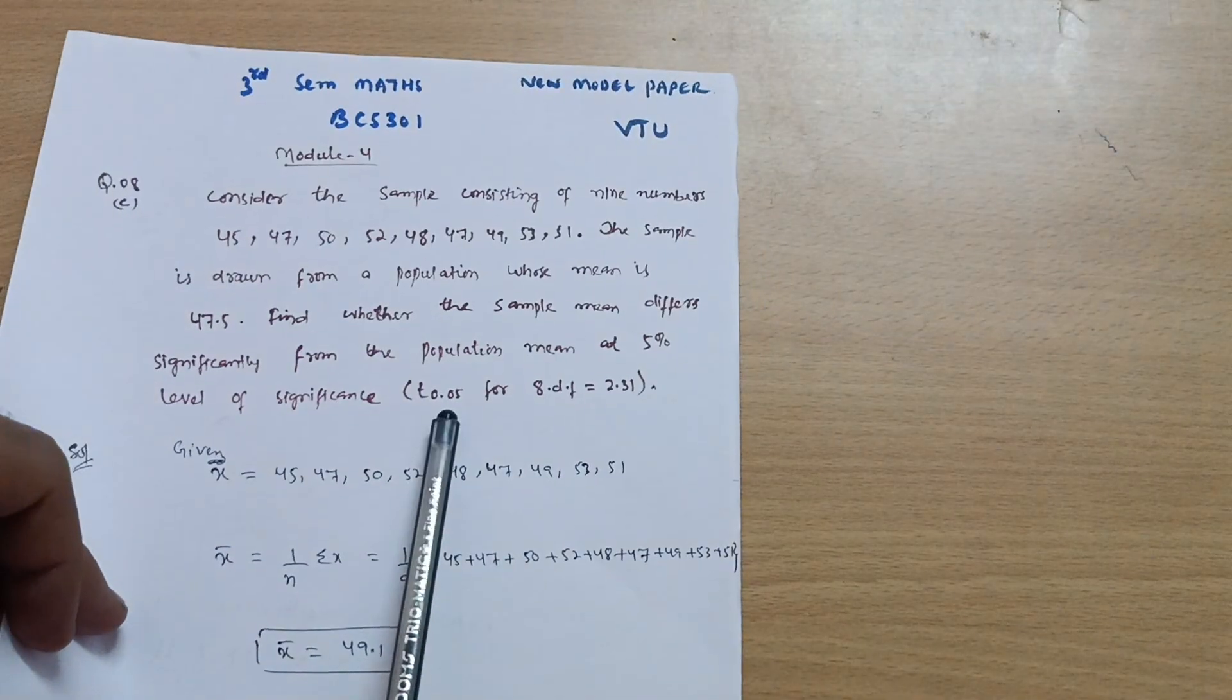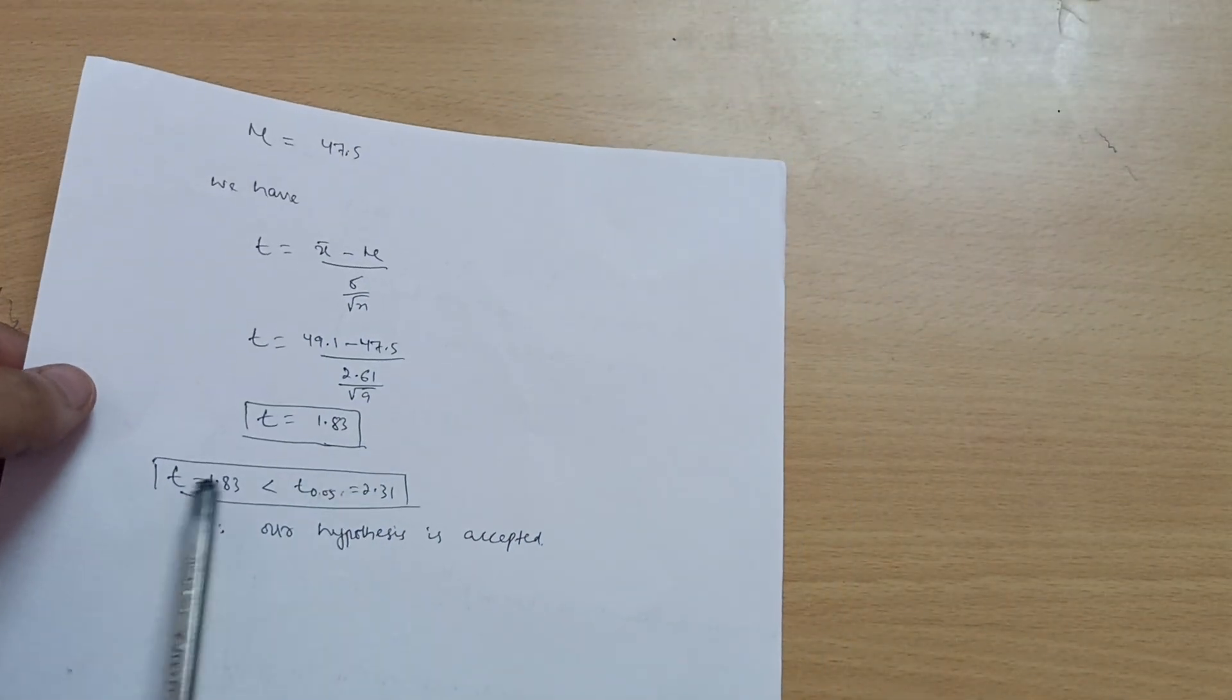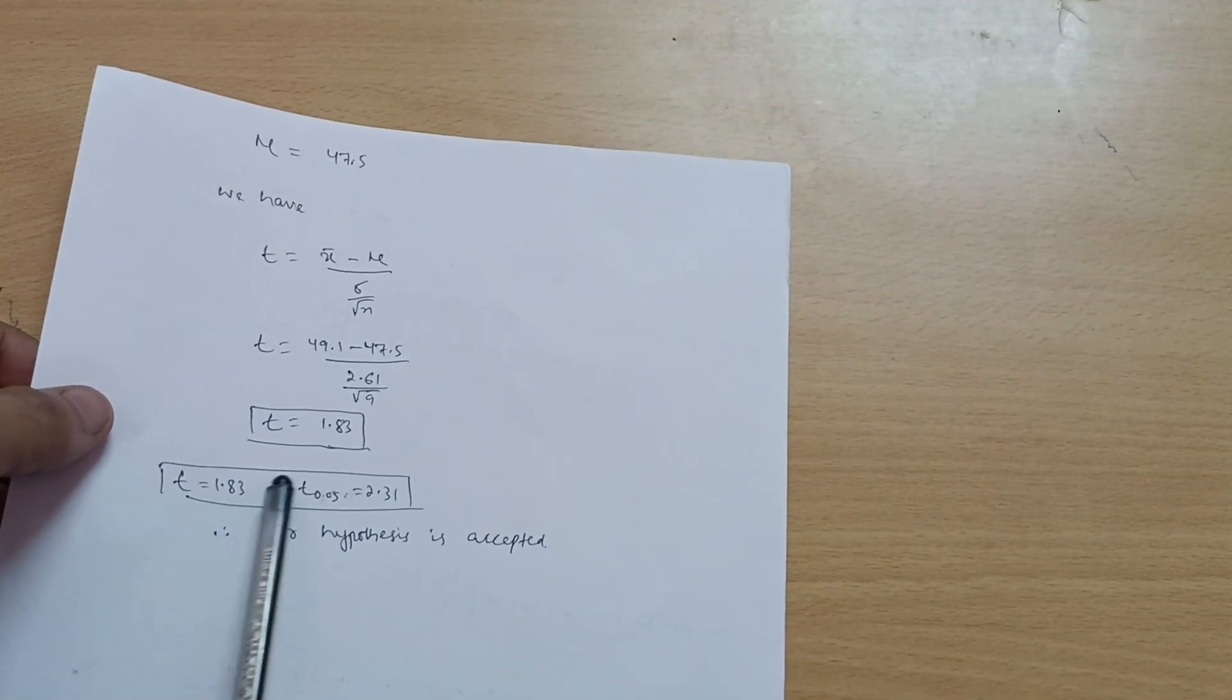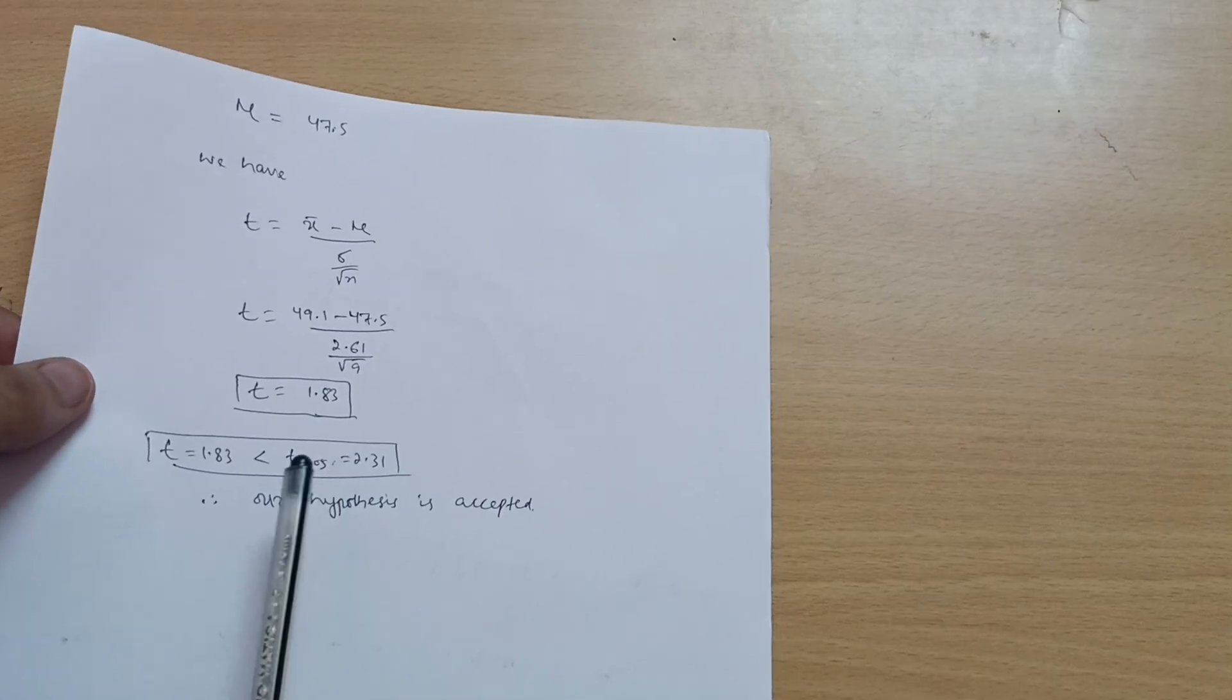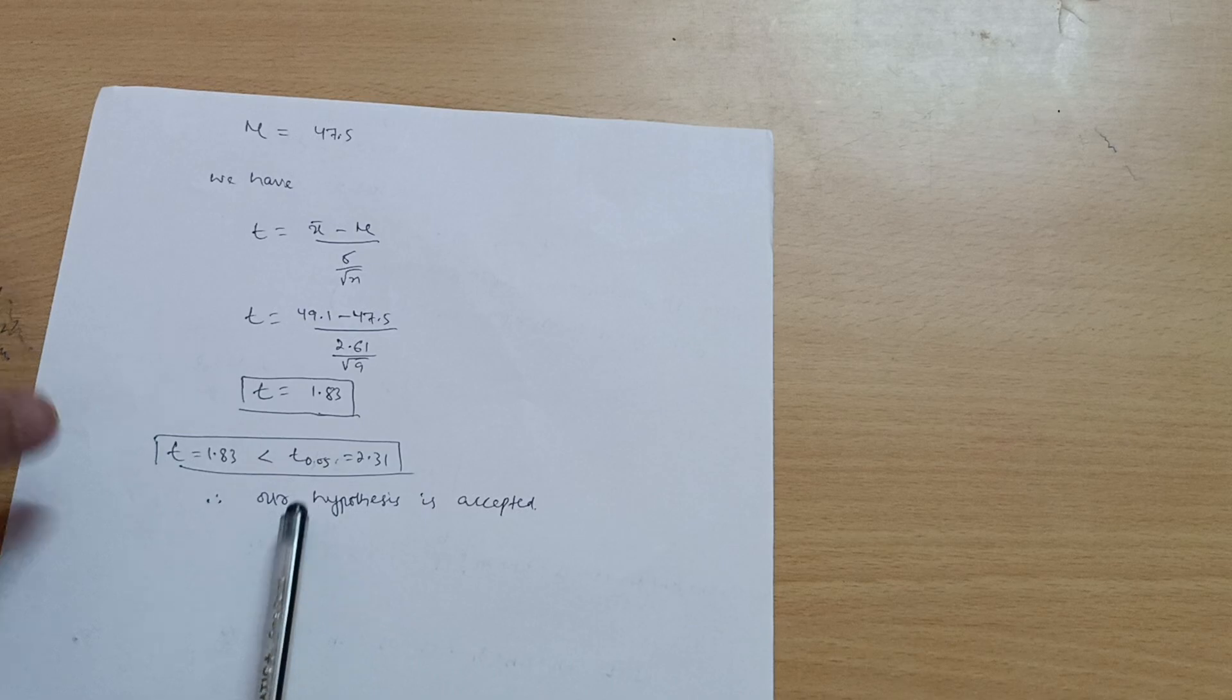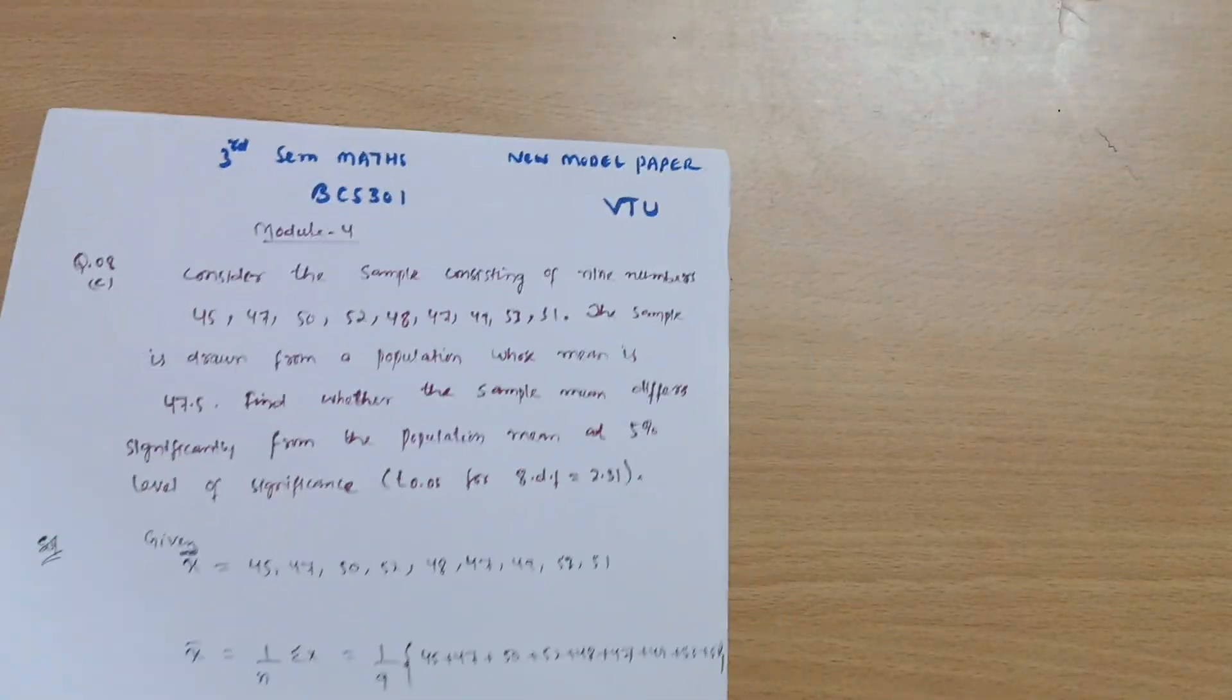As in the given problem, it is mentioned that at 5% level of significance we have the 2.31 value. But we are getting 1.83. I can write down t is equal to 1.83 is less than the 2.31 at 5% level of significance. Therefore, we can conclude that our hypothesis will be accepted in this case. So this much is the solution for this particular problem.